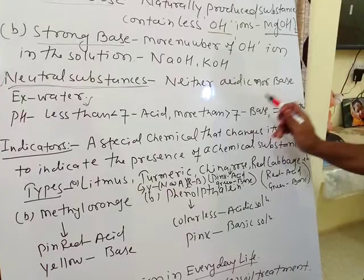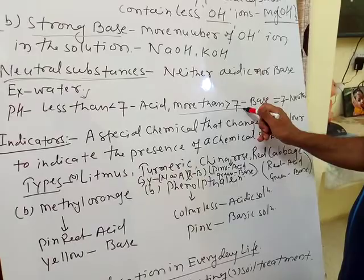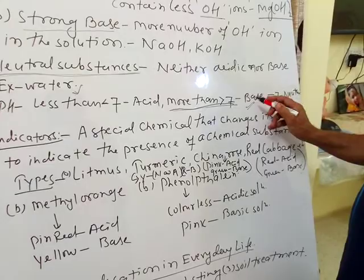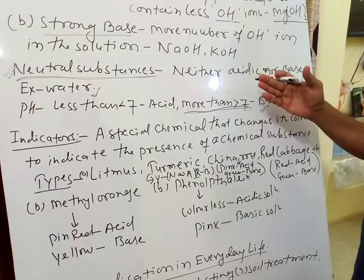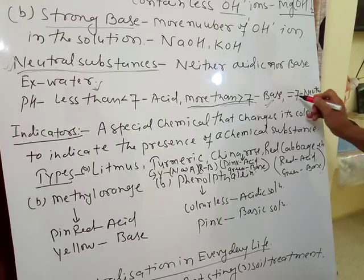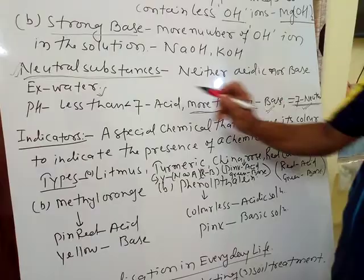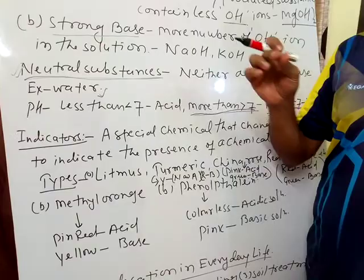Second, if the pH value is more than 7 — that is 8, 9, 10, 11 — that substance is a base. As we increase from 7 to 8 to 9 to 10, that substance becomes more basic. The substance which has a pH value of exactly 7 is called a neutral substance, for example water. If you take the pH paper and put it into water, the value will indicate 7.